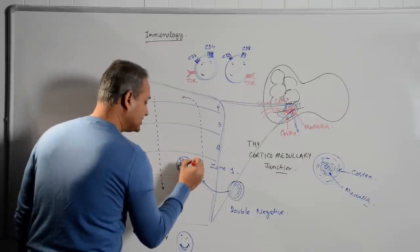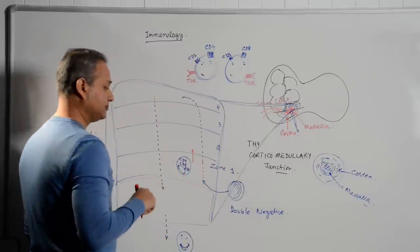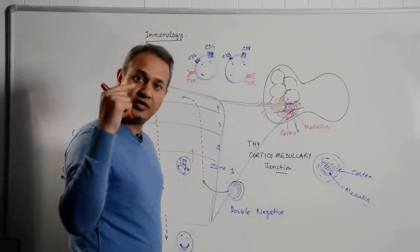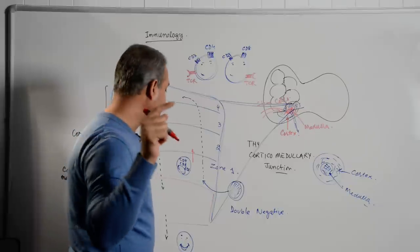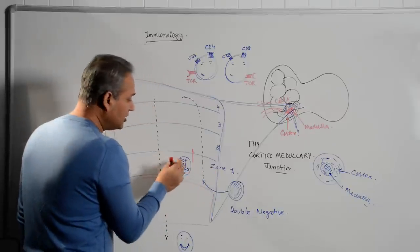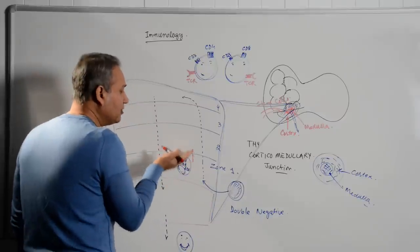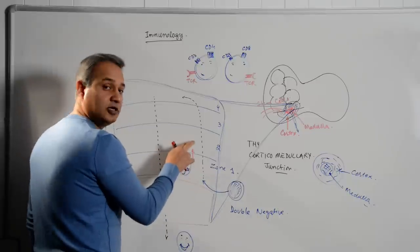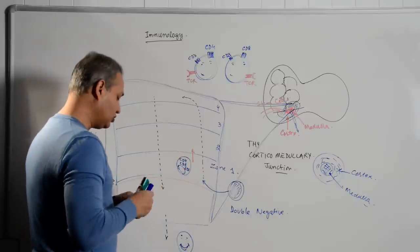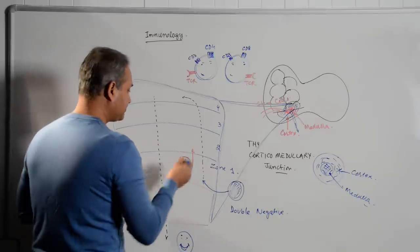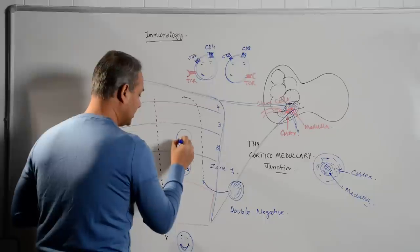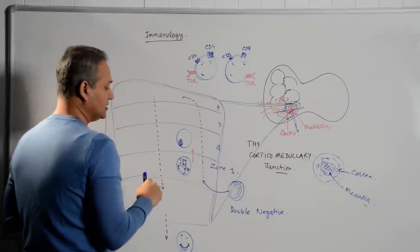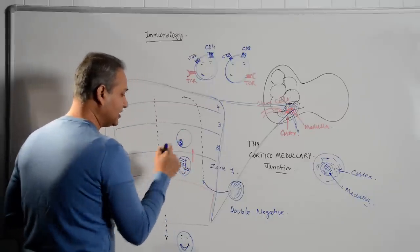From zone one, this cell moves to zone two. And if you look at my lecture, which I talked about the journey of a T cell through the body, in that I talk about the chemical molecules which help the cell move from areas to areas. So it moves from zone one to zone two.